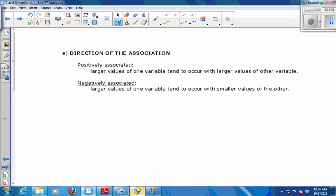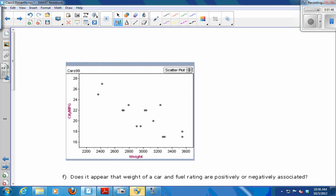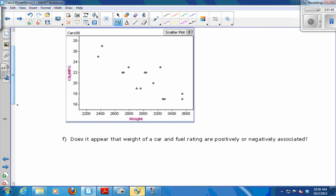So the direction of the association - positively associated variables mean that as one variable gets larger, so does the other. And negatively associated variables means that as one goes up, the other goes down. So what is the direction of the association for the car? Negative, yeah. As one goes up, the other goes down, so we call that a negative association. The direction of the association is negative.